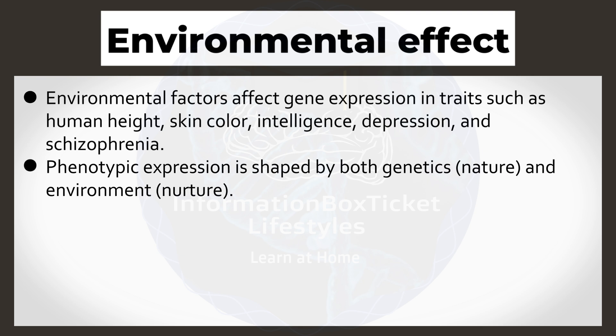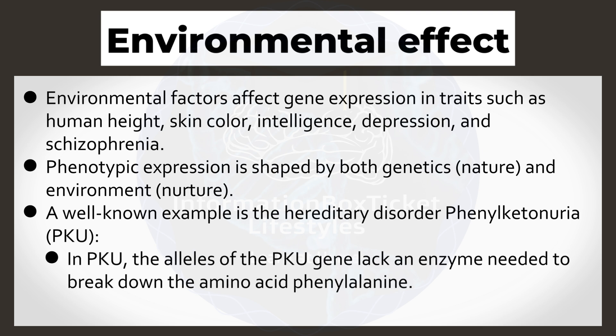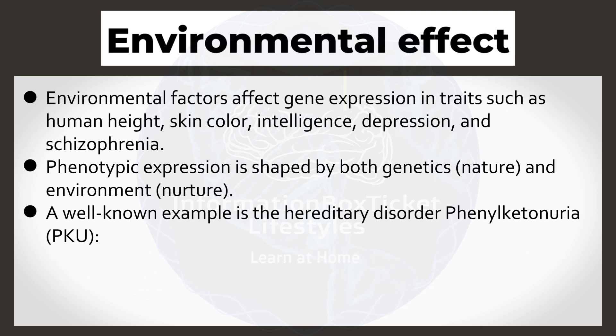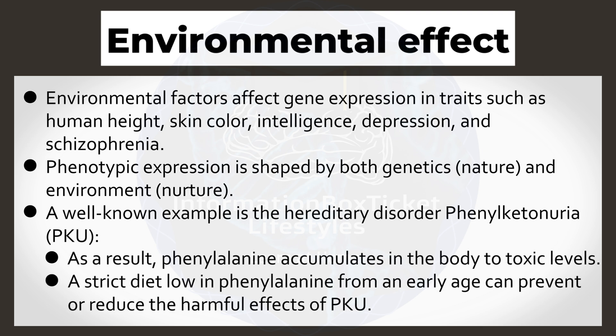Phenotypic expression is shaped by both genetics (nature) and environment (nurture). A well-known example is the hereditary disorder phenylketonuria. In phenylketonuria, the alleles of the phenylketonuria gene lack an enzyme needed to break down the amino acid phenylalanine. As a result, phenylalanine accumulates in the body to toxic levels. A strict diet low in phenylalanine from an early age can prevent or reduce the harmful effects of phenylketonuria.